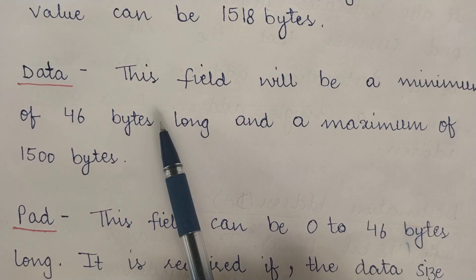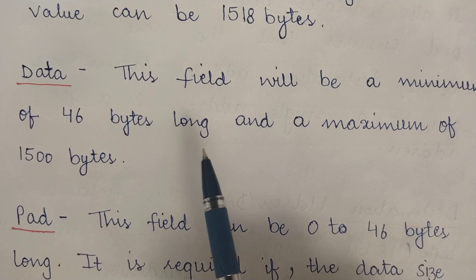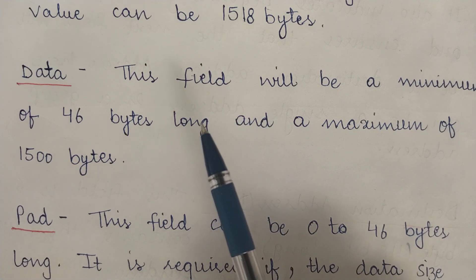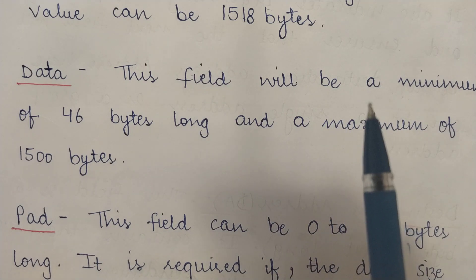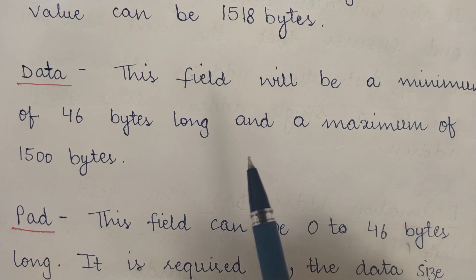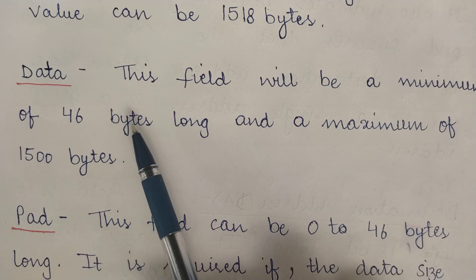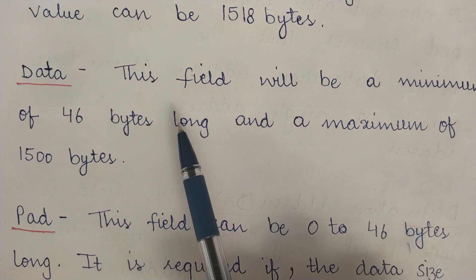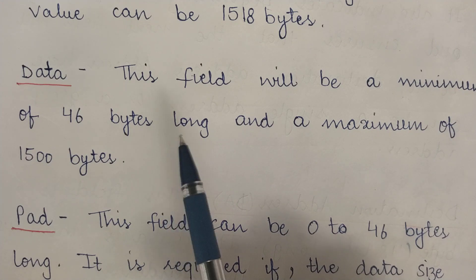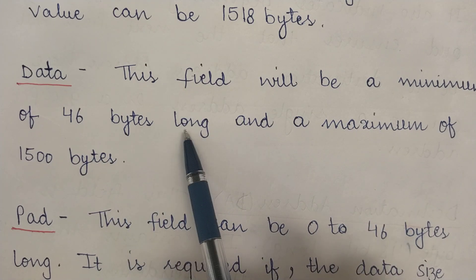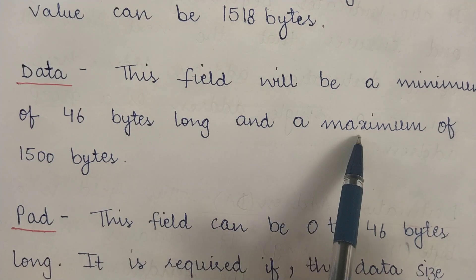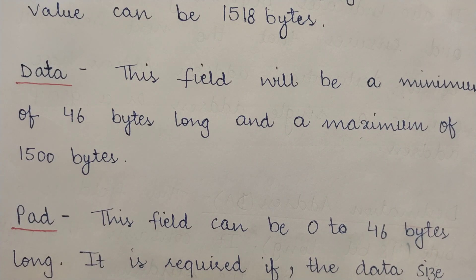The sixth field is the data field, which carries the actual data to be transmitted. All previous fields — preamble, start delimiter, destination address, source address, and length of data — are control information. The data field itself has a minimum size of 46 bytes and a maximum size of 1,500 bytes.